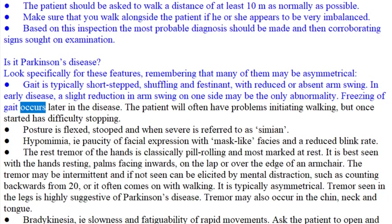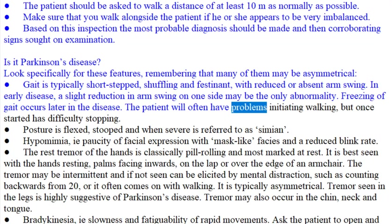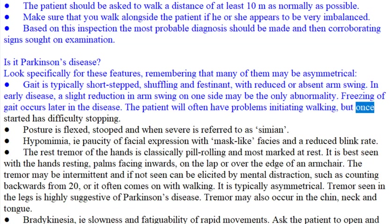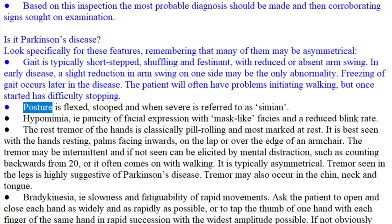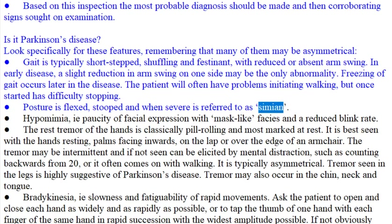Freezing of gait occurs later in the disease. The patient will often have problems initiating walking, but once started has difficulty stopping. Posture is flexed, stooped, and when severe is referred to as simian.